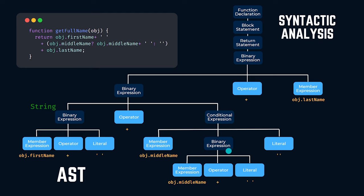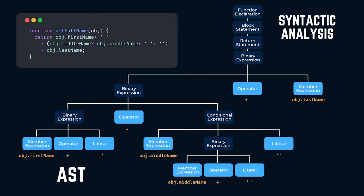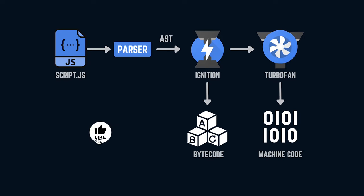When it comes to the conditional expression, whether the condition is true or not, it will return a string — since both branches involve string concatenation or a literal string. So whatever the value of this expression, it always returns a string type. The whole process is verified from leaf to root node. That's how a parser identifies whether the written program is correct or not.